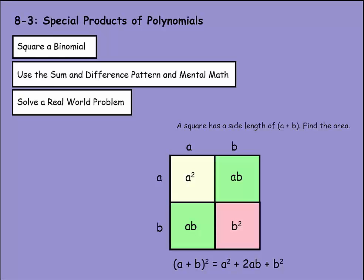We're on lesson 3 of chapter 8, which is Special Products of Polynomials. First we're going to square a binomial, then we're going to use a sum and difference pattern and mental math, then we're going to solve a real-world problem.